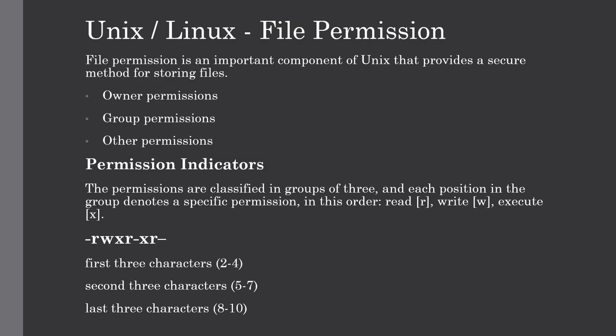In this lecture we will be discussing the different permissions and how we can grant permission to a specific file or a directory. File ownership is a very important component of Unix that provides a secure method for storing files. Every file in Unix has some attributes such as owner permission, group permission, and some other permissions.